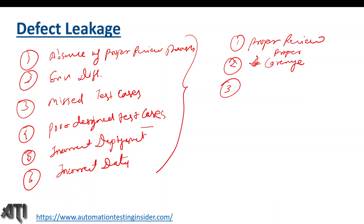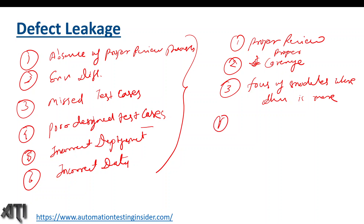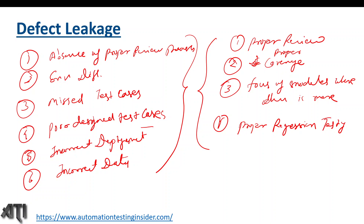Another point is to focus on modules where the chances of defects are more. And we should do proper regression testing to make sure we capture the impact of functionality changes on other modules. If you follow these practices, you will definitely minimize the defect leakage percentage.